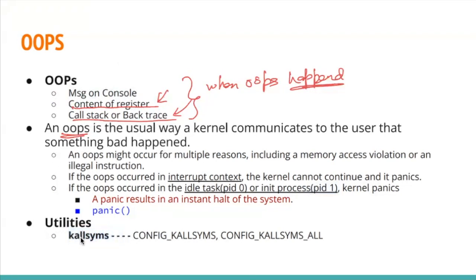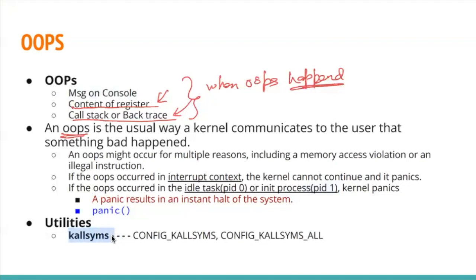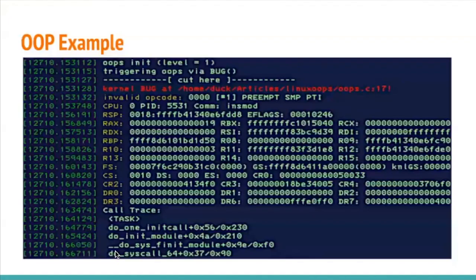To enable the kallsyms utility, we have specific kernel configurations. While building the kernel we can specify these configs and it will initiate this utility. Here is an example of an oops — you can see the different register values being printed and the call trace showing the sequence of functions that were running when the oops happened.